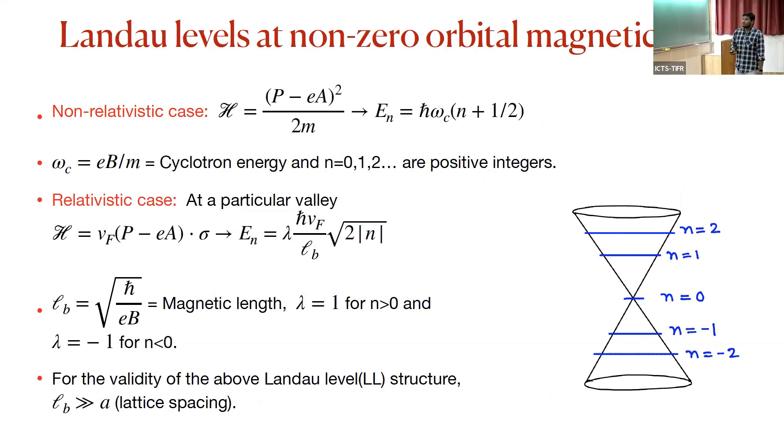Now in a Landau level limit where we put a very large non-zero orbital magnetic field, in the lowest order of Peierls substitution, you can substitute the momentum by the vector potential terms and you will get this Hamiltonian. If you do the quantization techniques and calculate the spectrum for this Hamiltonian, you will get this energy with this Landau level structure.